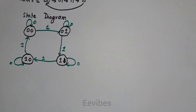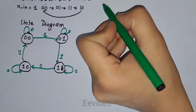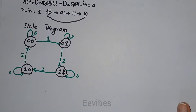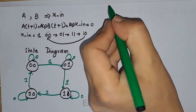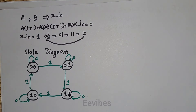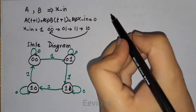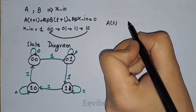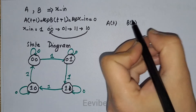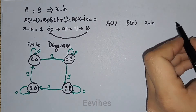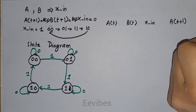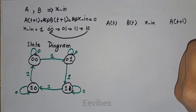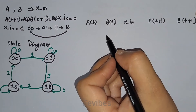The next step is to construct the state table. The state table is drawn by writing the current states of the flip-flops. Since two flip-flops are present, current states are denoted by A(t) and B(t), the input is x(n), and the next states are A(t+1) and B(t+1).